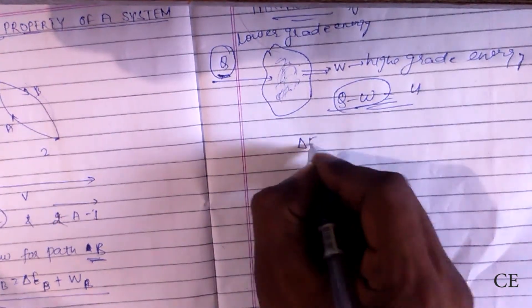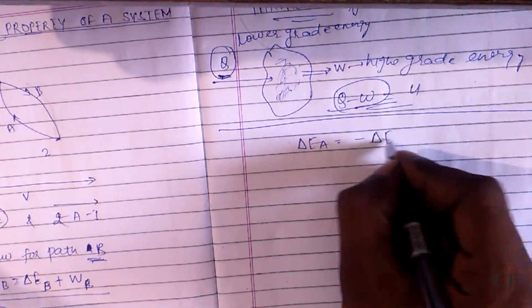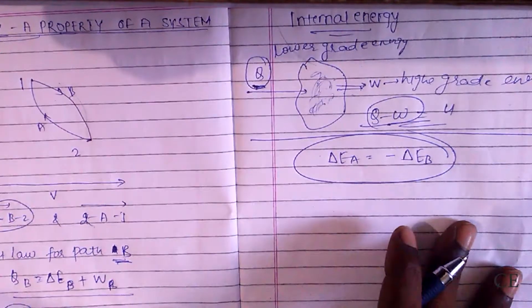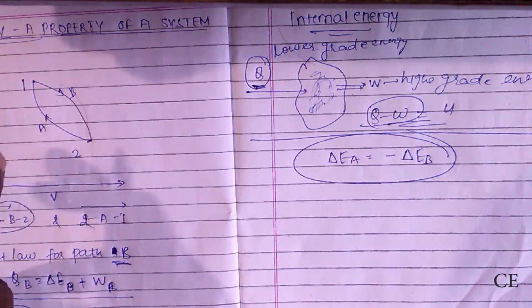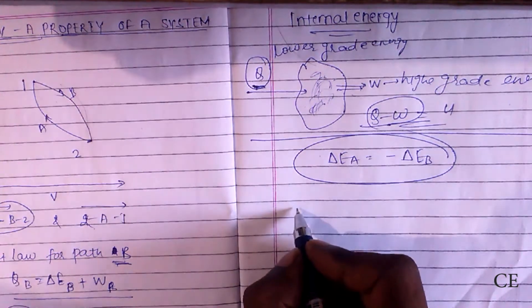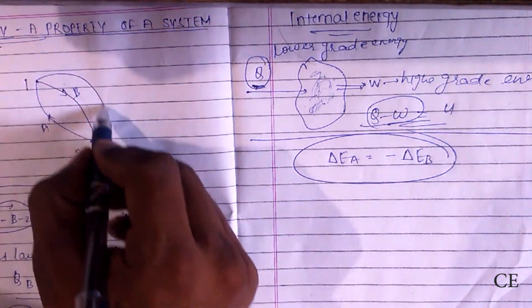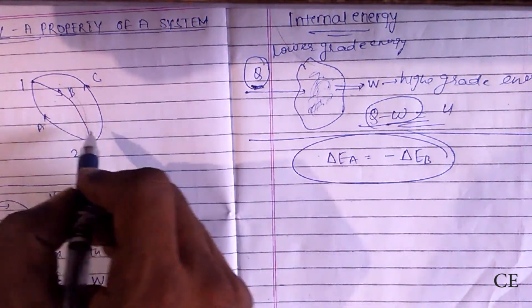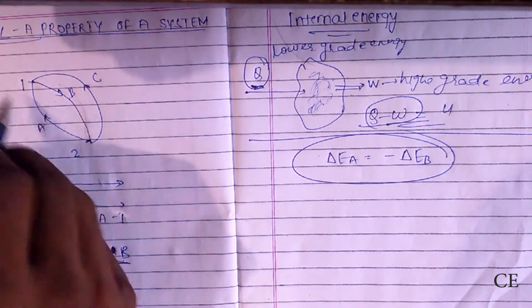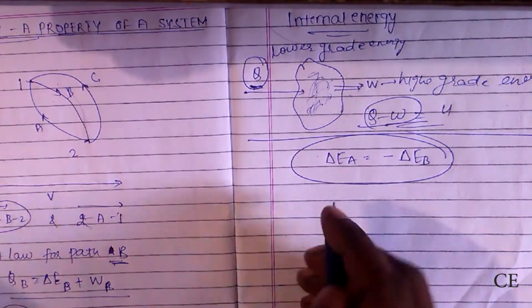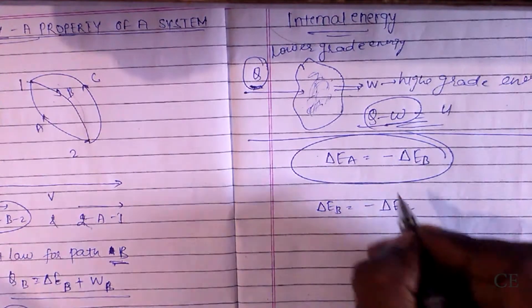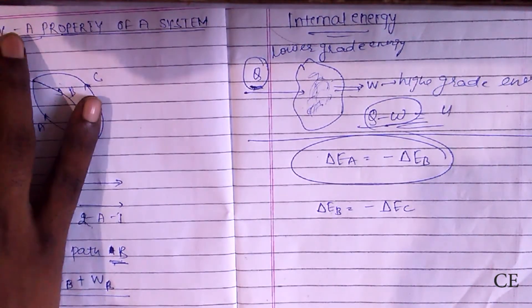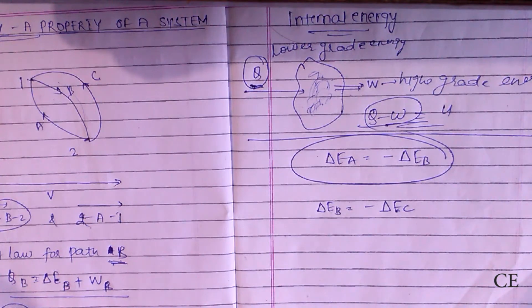...is independent of the path followed by the process. It is dependent on the states. So it is the property of the system. If it takes another path for returning, suppose it is going from this path and returning from another path C, then it will not depend on the path, it will depend on just the states that it has to achieve. So delta E_B is equal to minus delta E_C. If there is any other path, then it would be equal to the negative of that. So we can conclude that the change in internal energies is the same for any path that it is following.